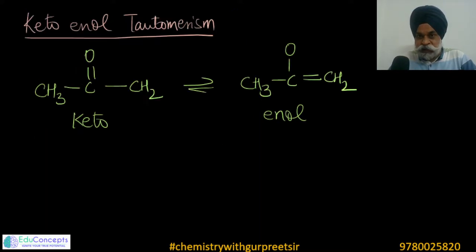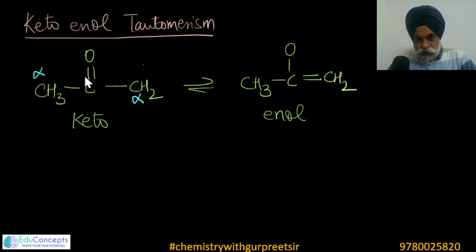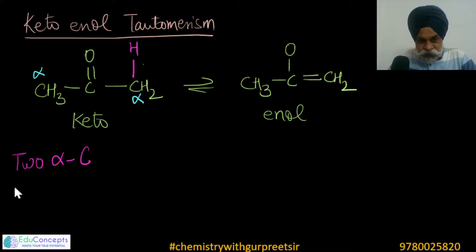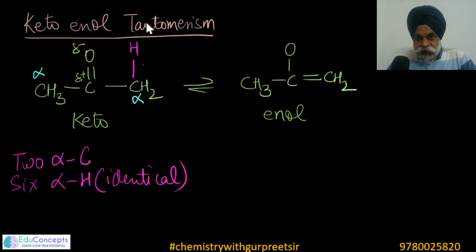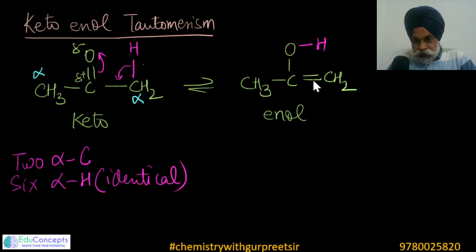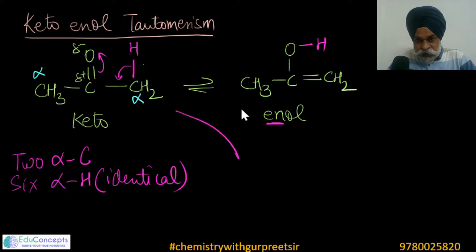Going into the details of keto-enol tautomerism: the alpha carbon is directly attached to the functional group — here, the keto group. Placing one hydrogen on it gives the alpha hydrogen. Here you have two alpha carbon atoms and six alpha hydrogen atoms, all chemically identical. Since this is delta-positive and delta-negative, this hydrogen tends to move to the other side — this bond goes here, this goes here — resulting in an enol structure. This is keto-enol tautomerism.